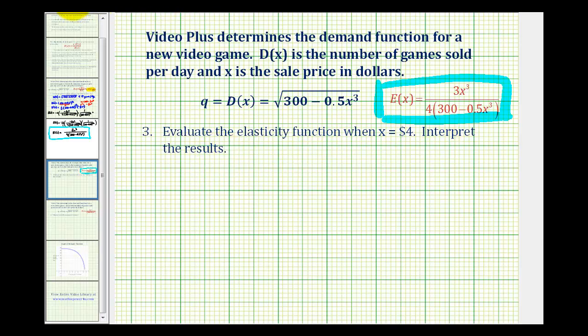So now we want to determine e of 4, which would be 3 times 4 to the third, divided by 4 times 300 minus 0.5 times 4 to the third. And to save some time I've already determined this value, it's approximately 0.18.